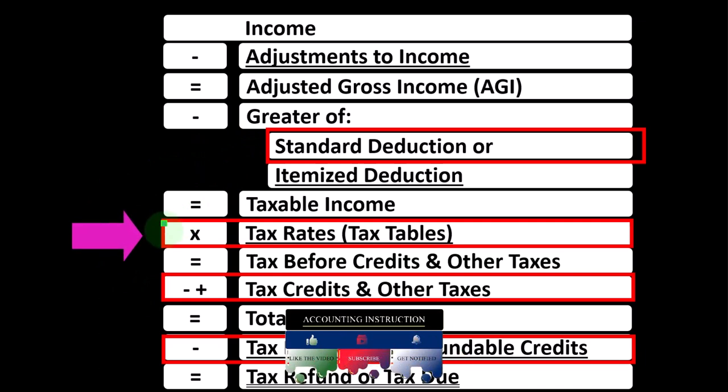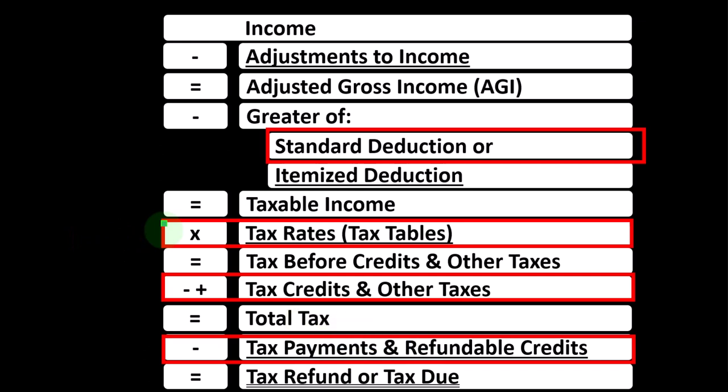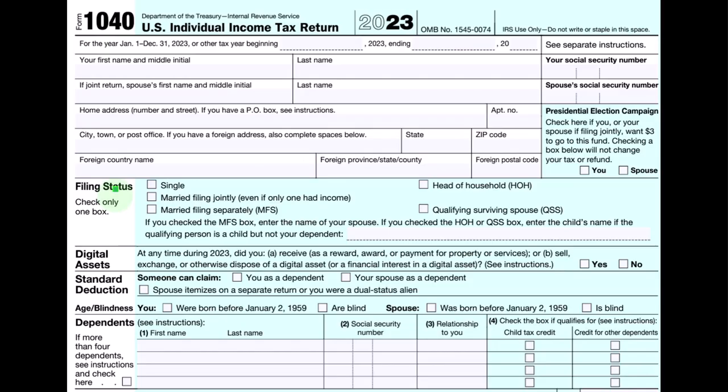We talked about dependents in a prior presentation. Usually, like with the filing statuses, it's pretty straightforward to determine if someone is a dependent. But sometimes there's a gray area. The general process is: do they qualify as a qualifying child? If so, you're looking to get the child tax credit, which is a higher benefit. If they don't qualify for the child tax credit, then you're seeing if you can get the other dependent credit.